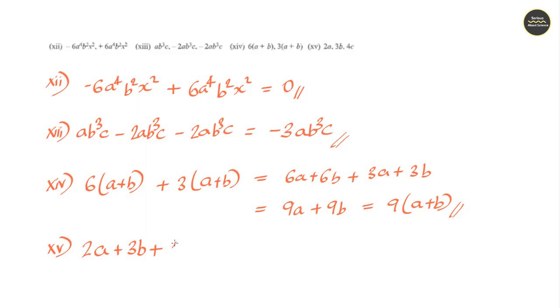Question number 15: 2a plus 3b plus 4c. Here these three are unlike terms and we cannot add unlike terms. There are no like terms to add, so the expression itself is the answer. Moving to Section 2: Simplify.